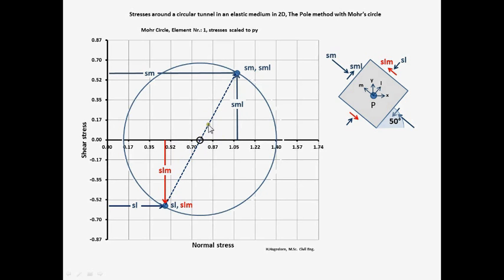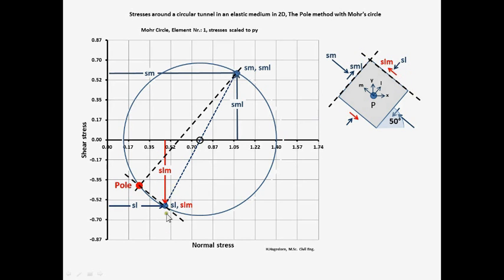Draw a parallel line to the element's plane at which the stresses S-M and S-ML are acting through the corresponding stress point. The intersection of this line with Mohr's circle represents the pole. Draw a parallel line to the element's plane at which the stresses S-L and S-LM are acting through the corresponding stress point. The intersection of this line with Mohr's circle must be the pole as well. Since a rectangular infinitesimal element is used, the pole must lie on a tail circle.